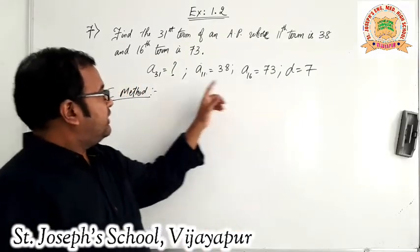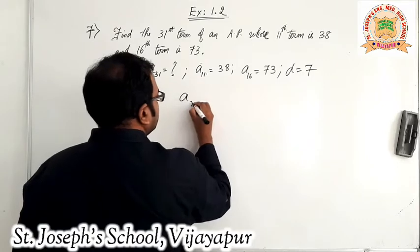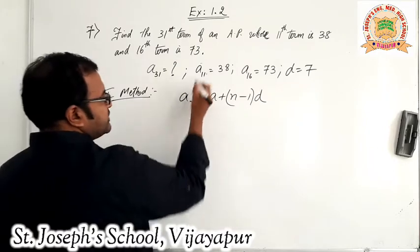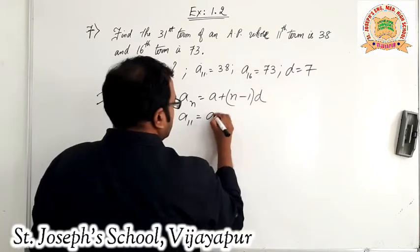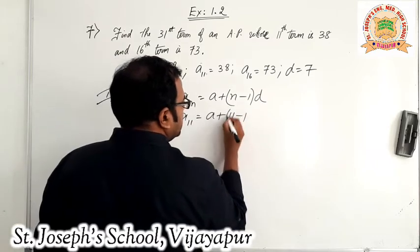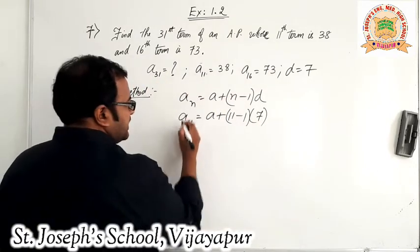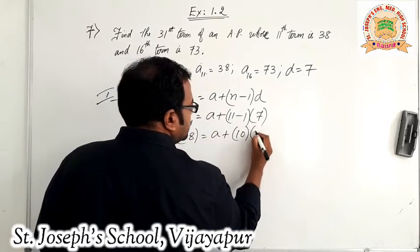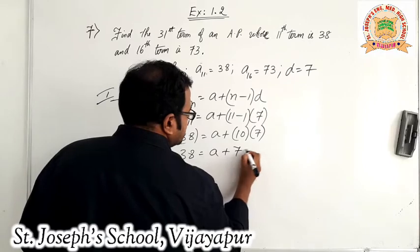Now we have got the D value. We can use any one of the given terms as AN in the AN formula. The AN formula is: AN equals A plus (N minus 1) into D. I will use A11. So A11 equals A plus (11 minus 1) into D, which is A plus 10 into 7. A11 is given as 38, so 38 equals A plus 70.